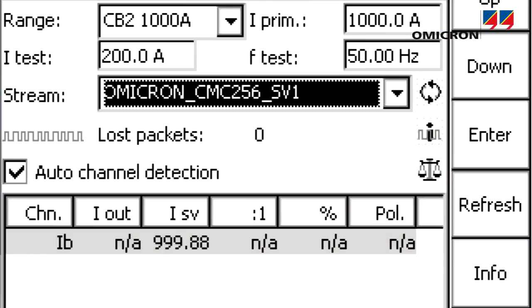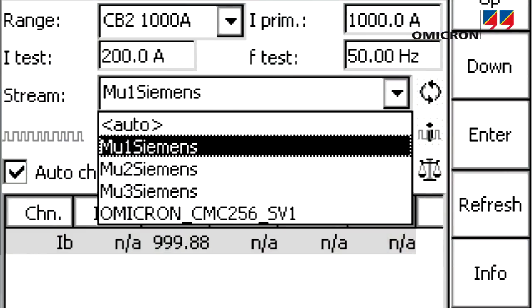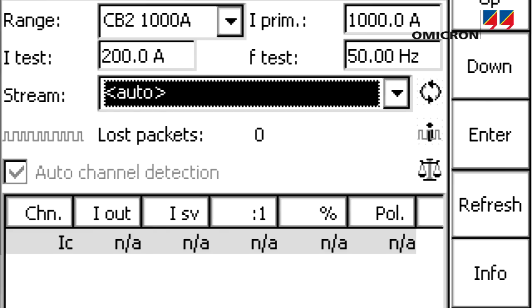This characteristic pattern allows the CPC-100 to identify the corresponding stream and channel automatically.